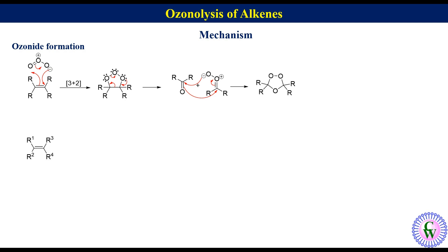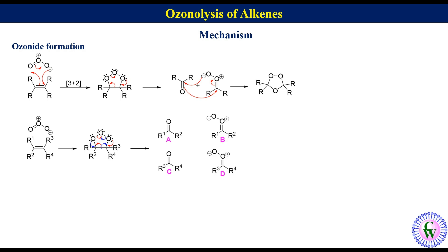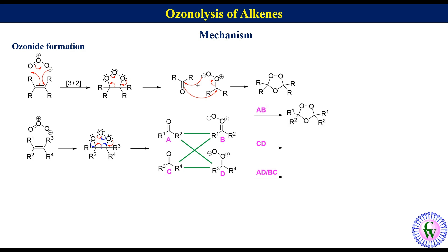Now let's consider the case where the alkene is unsymmetrically substituted. It reacts with ozone to produce primary ozonide, which can decompose by two ways: decomposition one gives carbonyl compound A and carbonyl oxide B, while decomposition two gives carbonyl compound C and carbonyl oxide D. There are four possibilities for recombination: AB, CD, AD, and BC. Since AD and BC give the same product, there will be three secondary ozonides.